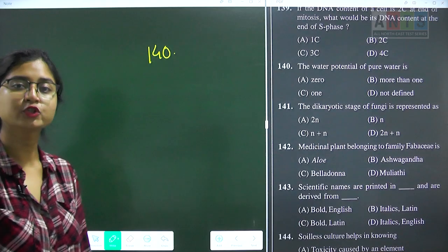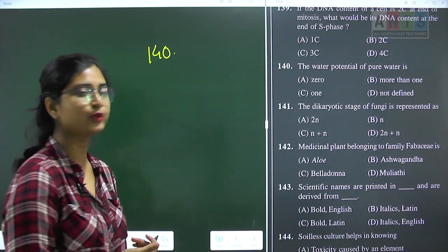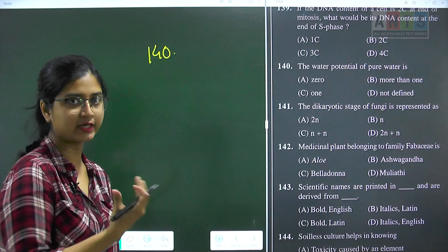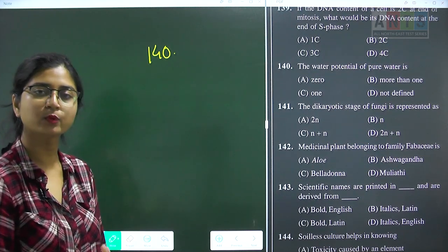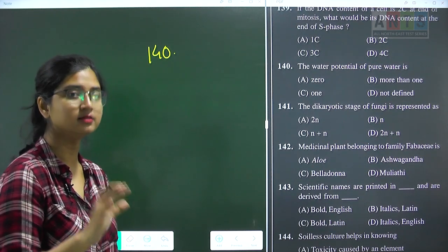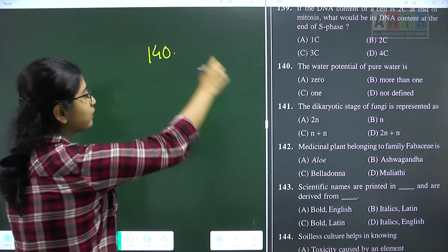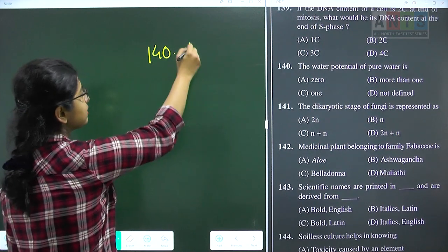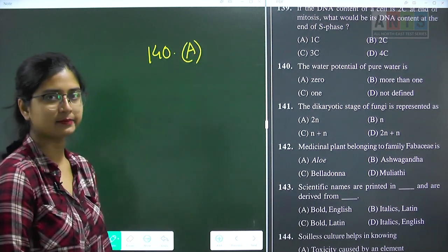Question 140: the water potential of pure water. By convention, the water potential of pure water is considered to be zero. Question 140 answer is option A.